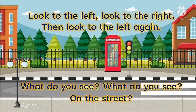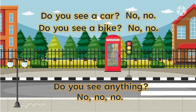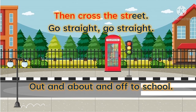Look to the left, look to the right, then look to the left again. What do you see? What do you see on the street? Do you see a car? No, no. Do you see a bike? No, no. Do you see anything? No, no, no. Then cross the street, go straight, go straight, out and about and off to